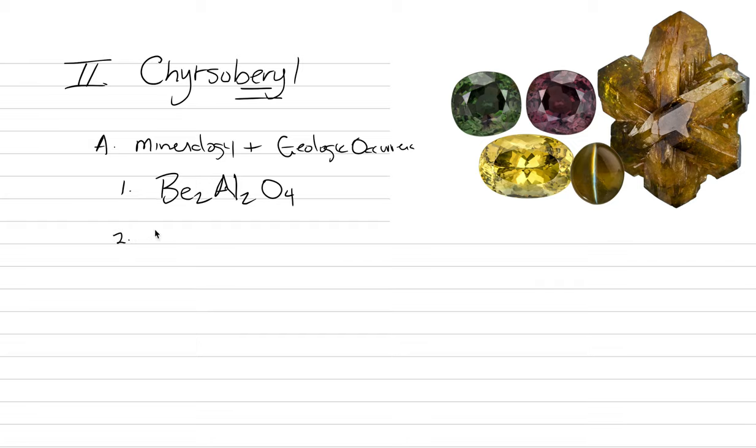The important mineralogical aspect of chrysoberyl that makes it such a great gemstone is its hardness. On Mohs scale, it is an 8.5 of hardness, making it the third hardest of all the gemstones after sapphire and after diamond. This hardness makes it have fantastic survivability.